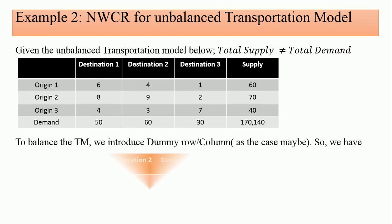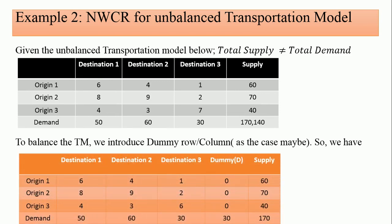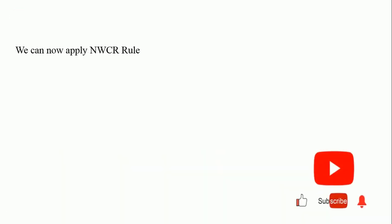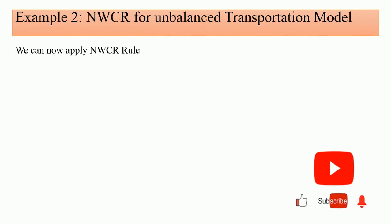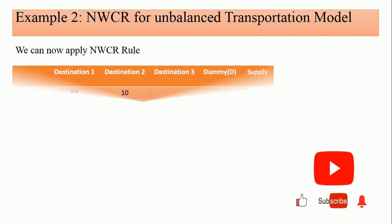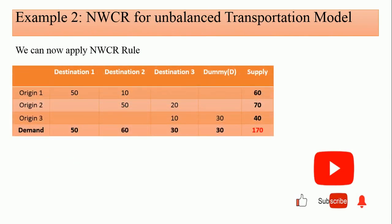And mind you, the unit cost for the dummy created column will be zero, zero, zero, zero unit cost. And how do we apply the North West Corner Rule? You apply the North West Corner Rule following the previous procedure.